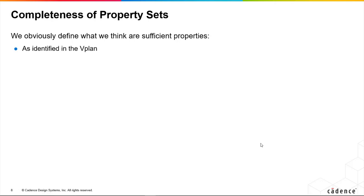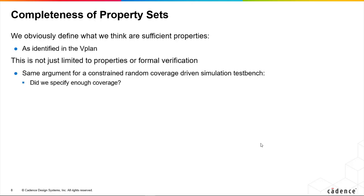If we're using Jasper Gold, we're going to write some properties in order to check that our behavior is correct, and those checks are being derived from the verification plan. The reasoning we're going to apply here doesn't necessarily only apply to formal — you could make similar arguments for simulation. For example, if you have a constrained random stimulus test bench which is coverage-driven,